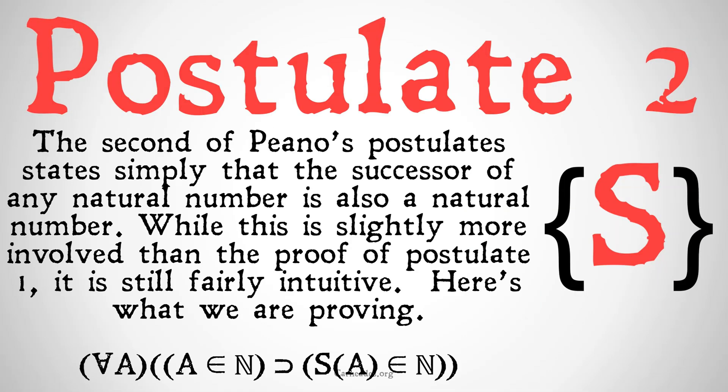The second of Peano's postulates states simply that the successor of any natural number is also a natural number. While this is slightly more involved than the proof of postulate one, it is still fairly intuitive based on the definitions of successorship and natural numbers.